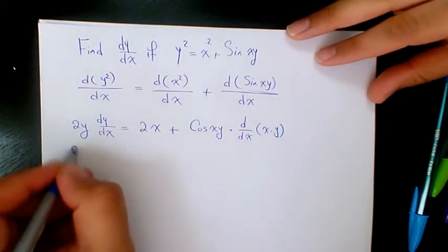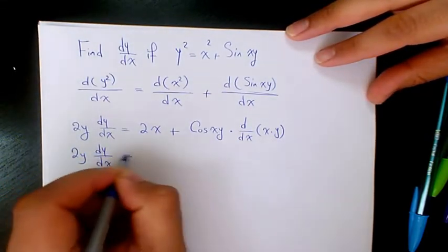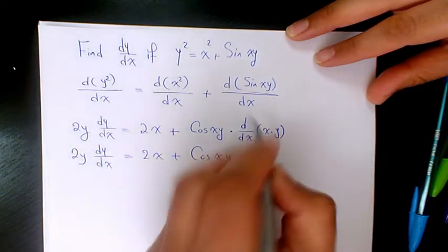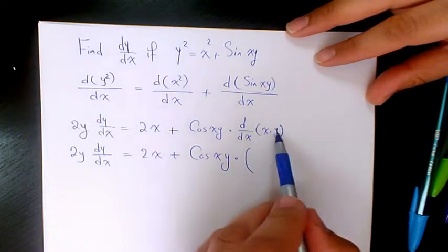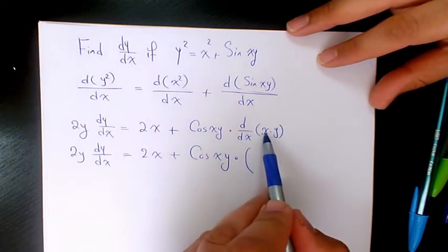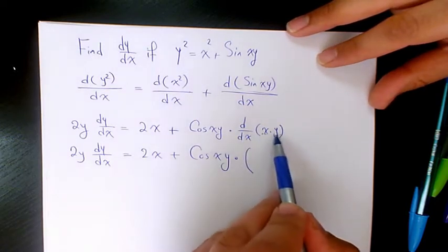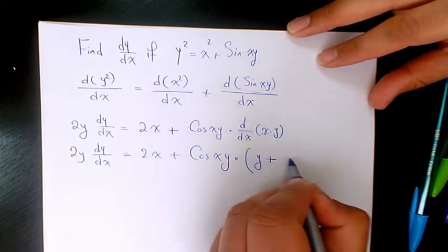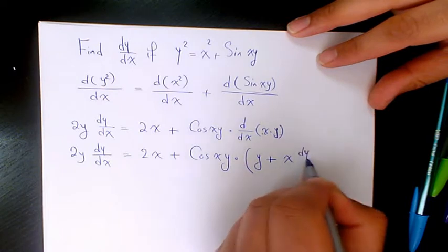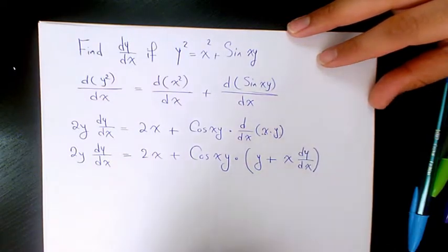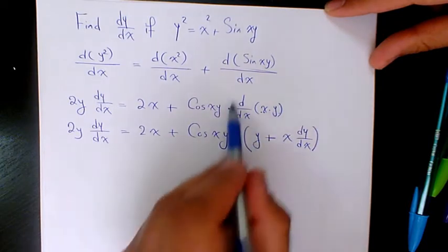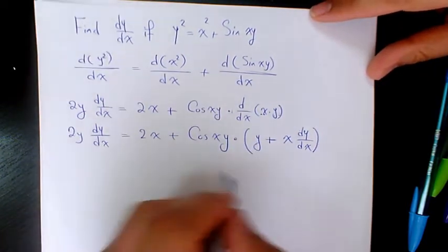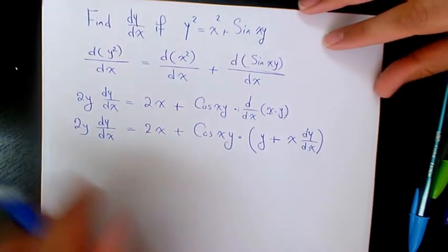So we have 2x plus cos(xy) times the derivative of xy. That derivative uses the product rule: derivative of x times y plus x times derivative of y, giving us y + x dy/dx. That is the derivative of the sin(xy) part.